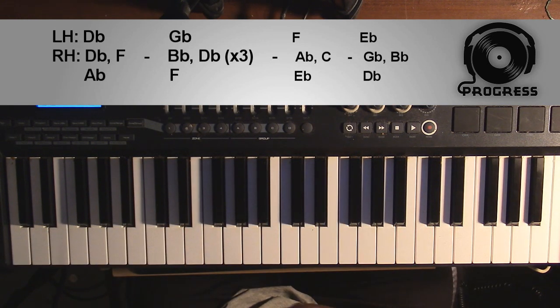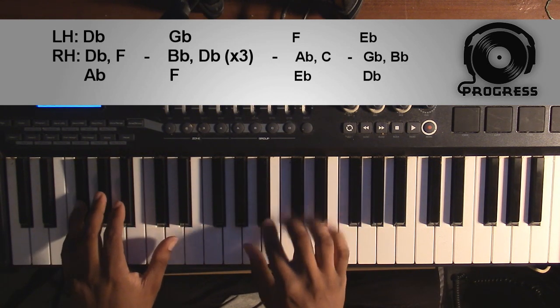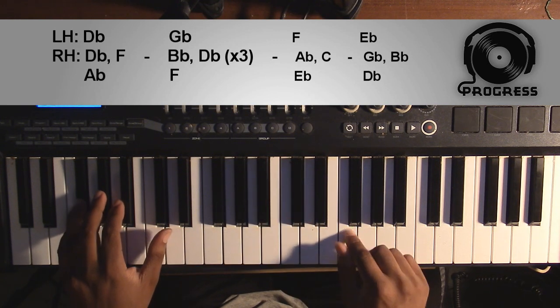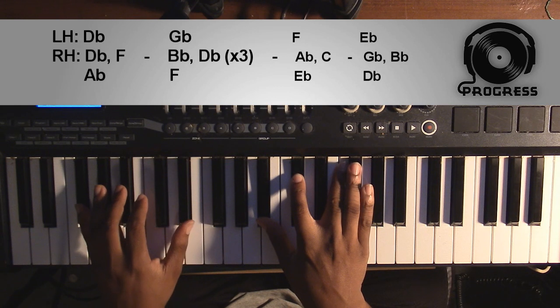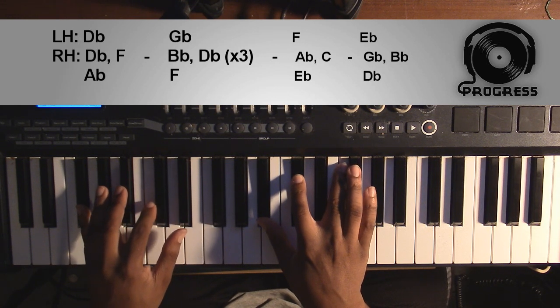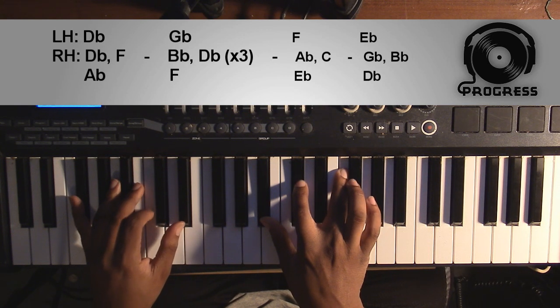Second chord's going to be a G-flat major 7 chord. Left hand you're going to have a G-flat, right hand you'll have a B-flat, a D-flat, and an F. And it's actually going to toggle between these two chords three times before it moves on. So it'll go up again. Do it one more time.